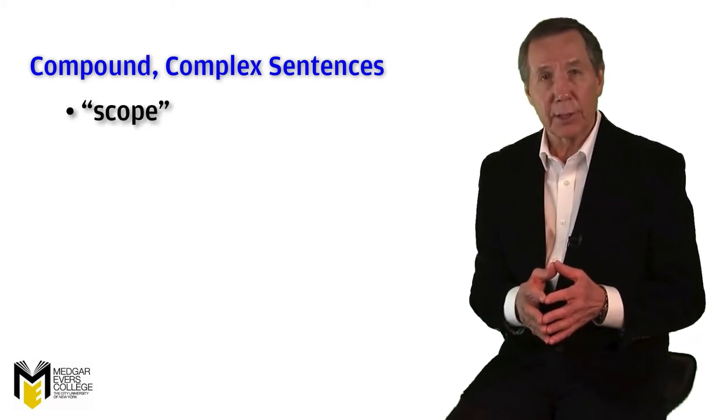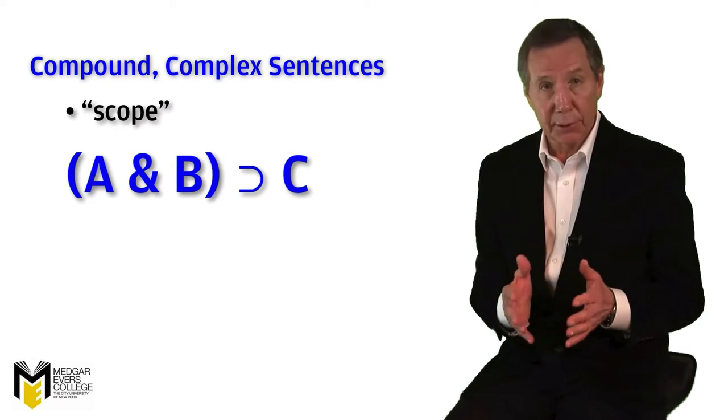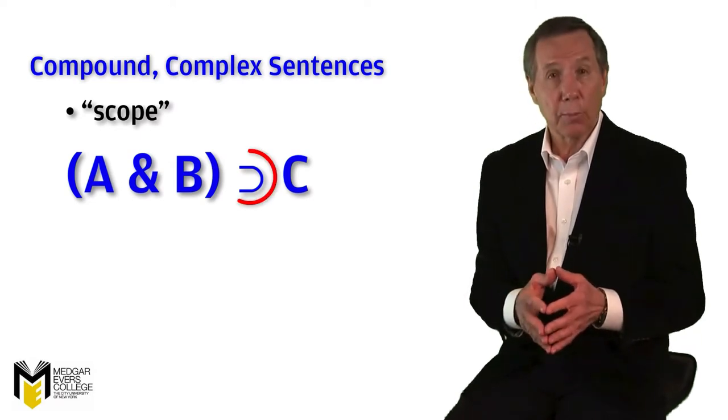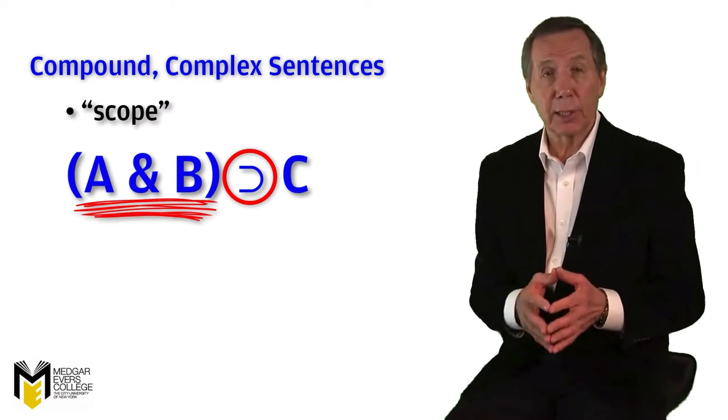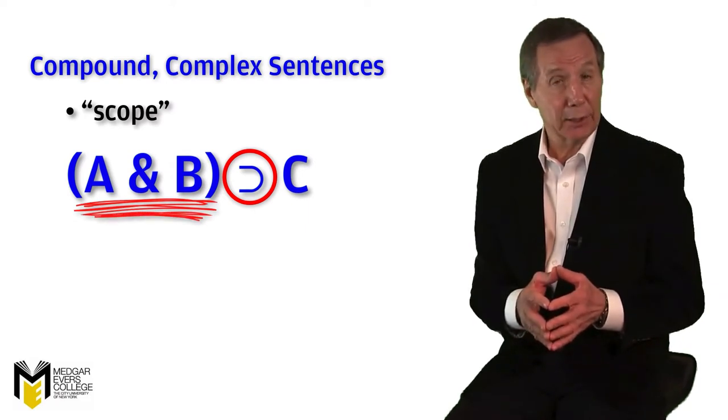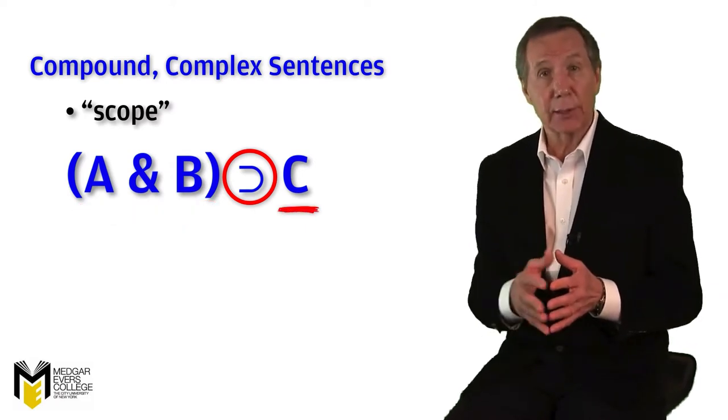So in the sentence, if both A and B then C, the scope of the connective, in this case the horseshoe, includes the conjunction A and B as the antecedent and C as the consequent.